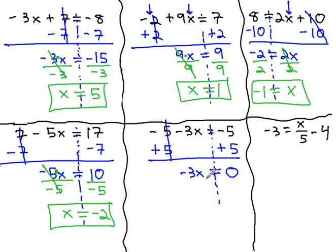Finally, since that's negative 3 times x, we undo multiplication with division, by dividing by negative 3 to give us x equals 0.